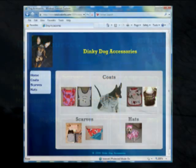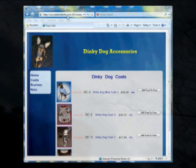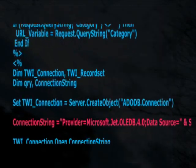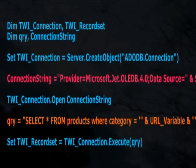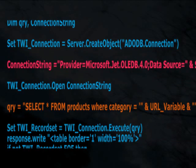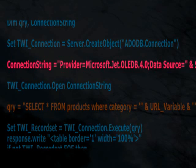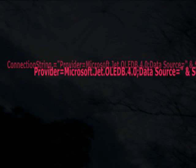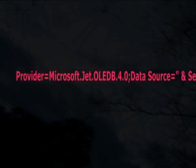Remember the Dinky Dog example website and the body page that returns the various Dinky Dog products? Let's take a look at the code behind this page. In this case, it is VBScript or ASP that harvests the data from the data source and displays it in the body page of the Dinky Dog Accessories website. Let's look at the all-important connection string. As you can see here, there is a variable named connection string that is equal to some provider. In this case, I am using the OLEDB provider,